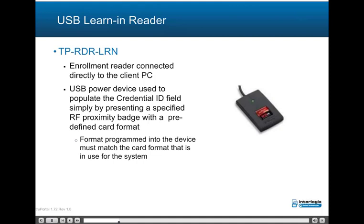The TPR-DRLRN USB Learn and Reader is an enrollment reader connected directly to the TruePortal client PC. It is a USB-powered device used to populate the credential ID field simply by presenting a specified RF proximity badge with a predefined card format. The format programmed into the device must match the card format that is in use for the system.